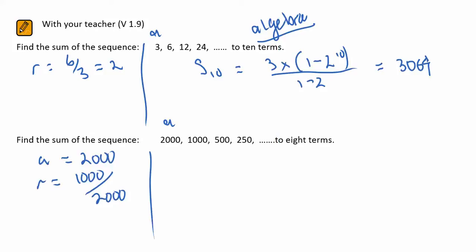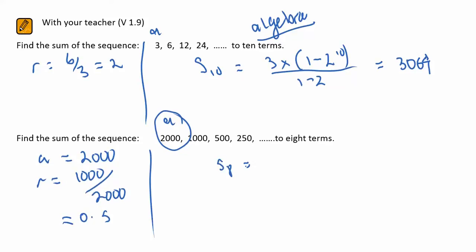In the second problem, once again determine your first term and then your common ratio. So 1000, the second term divided by the first term, which gives us 0.5. Sum to eight terms, and that should give you quite a large number. Once again, it would pay to check that using the calculator.